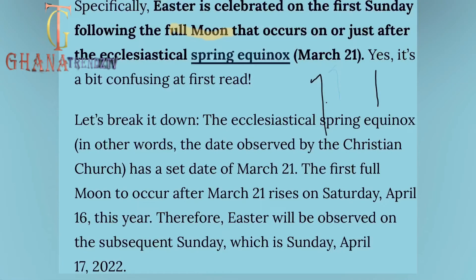I'll explain it — I'm not here to read chunks of information to you. I'm going to summarize everything. Specifically, Easter is celebrated on the first Sunday following the full moon that occurs on or just after the ecclesiastical spring equinox, March 21st. Yes, it is a bit confusing at first — let's break it down.